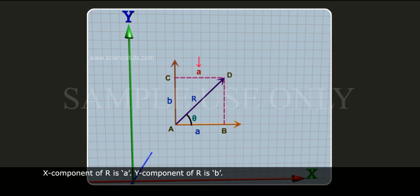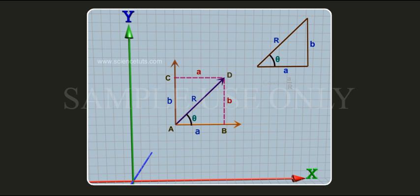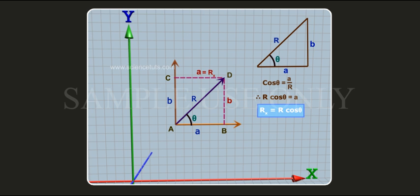The x-component of r is a, and the y-component of r is b. Now, cos theta is equal to a divided by r. Therefore, r cos theta is equal to a, or rx is equal to r cos theta.